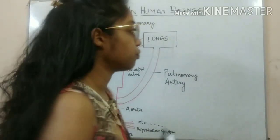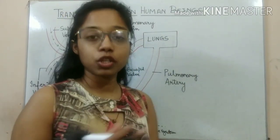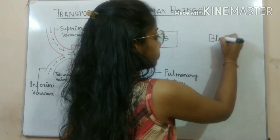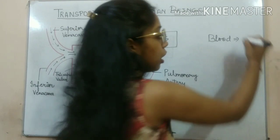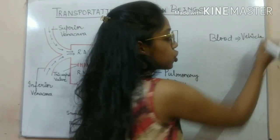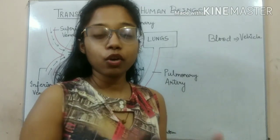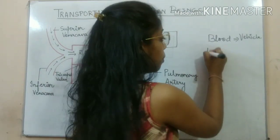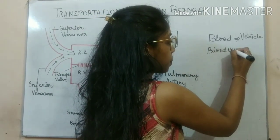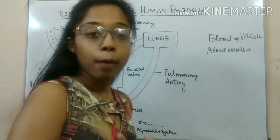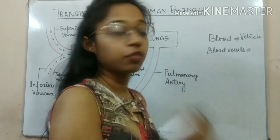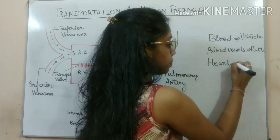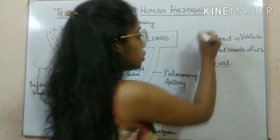Let's first understand what the main components of this transport system are. The first important component, which acts as a carrier, is blood. Blood is like the vehicle on which nutrient molecules and oxygen sit and complete their journey. The second component is blood vessels — these are the pathways, or roads and highways.